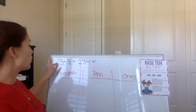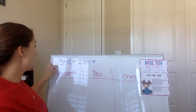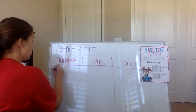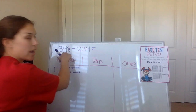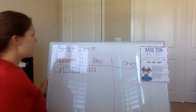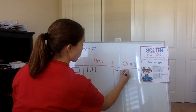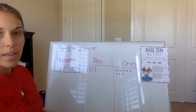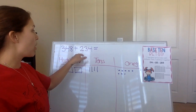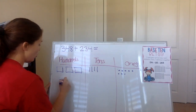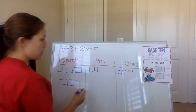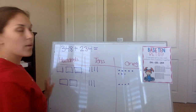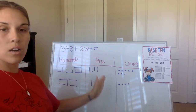Our next problem is 348 plus 234. We need to break up 348 into our base ten chart. So we have three hundreds, four tens, and eight ones. Now we need to break apart 234 on our base ten chart. In 234, there are two hundreds, three tens, and four ones. Now that we have all our information organized in our base ten chart, all we need to do is add.